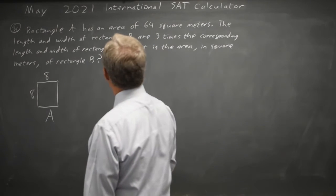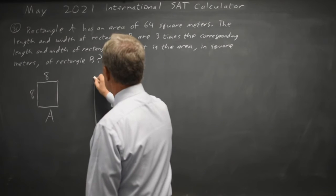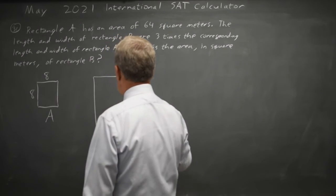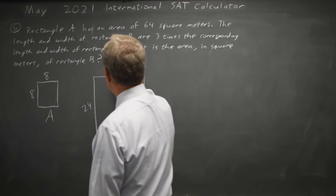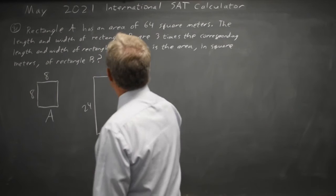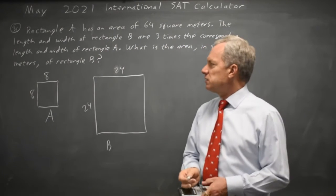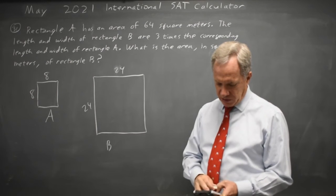Rectangle B is 3 times the length and 3 times the width. So 3 times 8 is 24, 3 times 8 is 24. They're asking for the area in square meters of rectangle B, and that'd be 24 times 24.